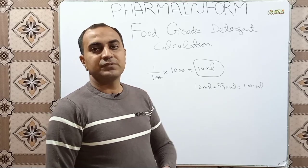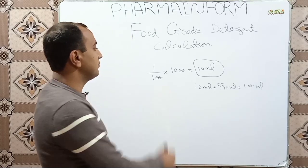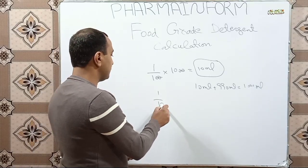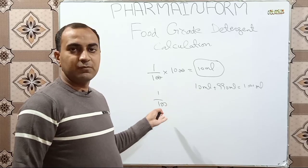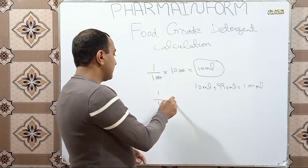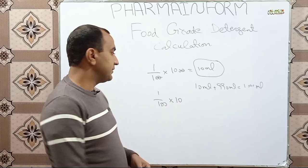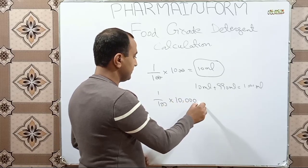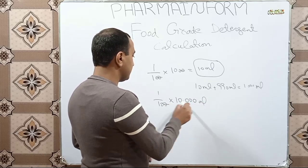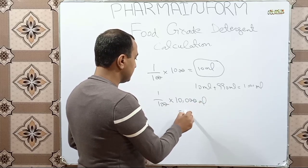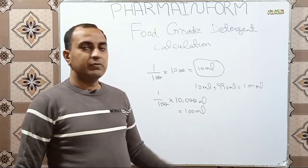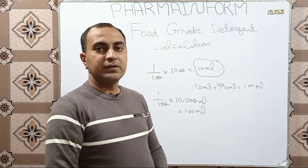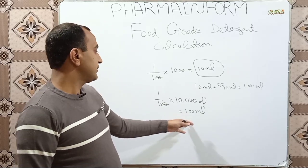The basic concept is the same. Simply, 1 into 100 for percentage conversion, over 10 liters, which means 10,000 ml. So the answer is 100 ml. We will take 100 ml of food grade detergent and make it up to 10 liters using the remaining quantity of purified water.